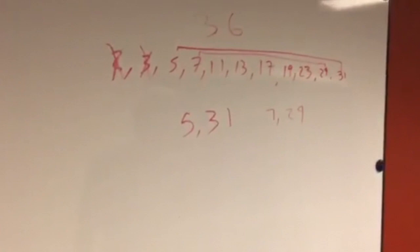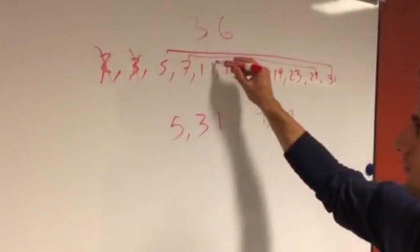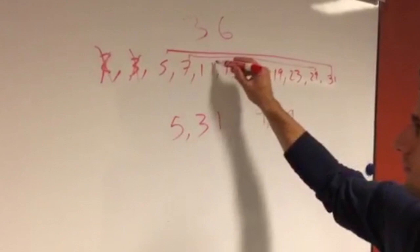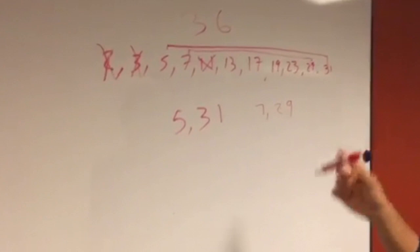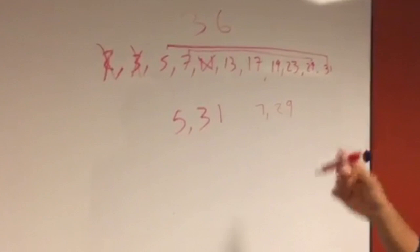Eleven does not work. And then the next number is thirteen. In order to get to thirty-six, we need to add twenty-three, which is also a prime number. So, that works.